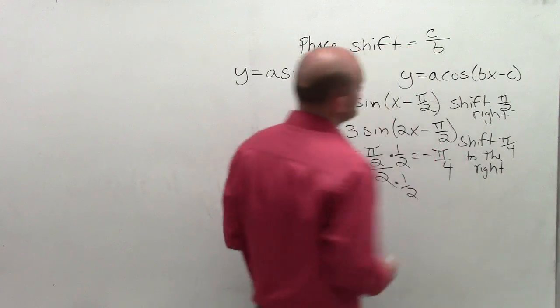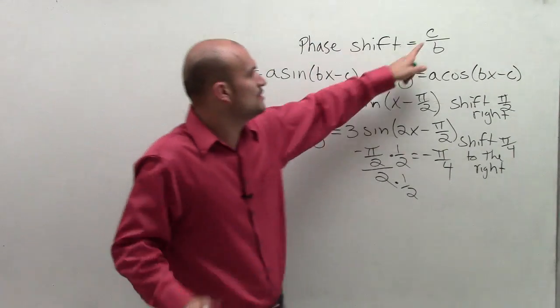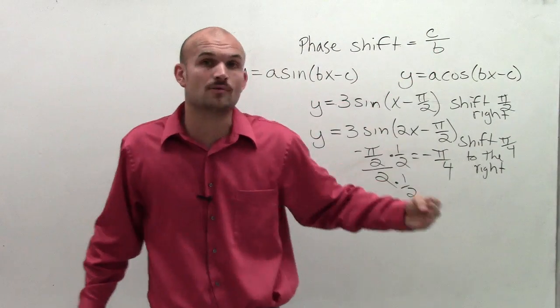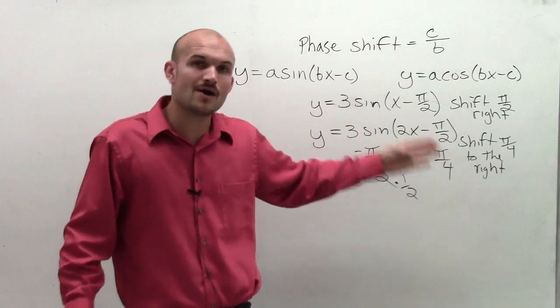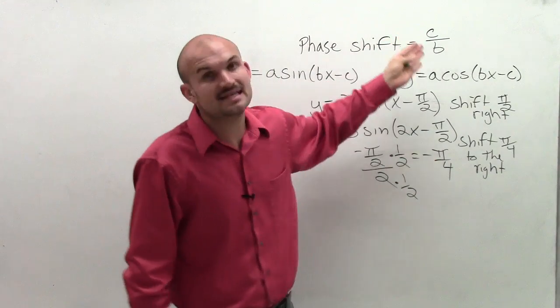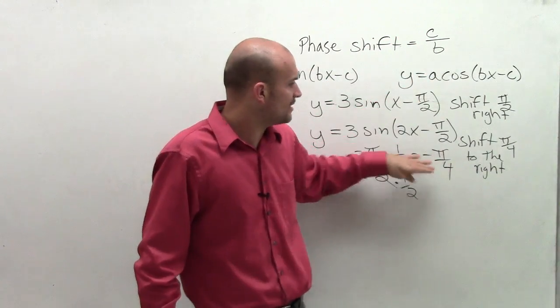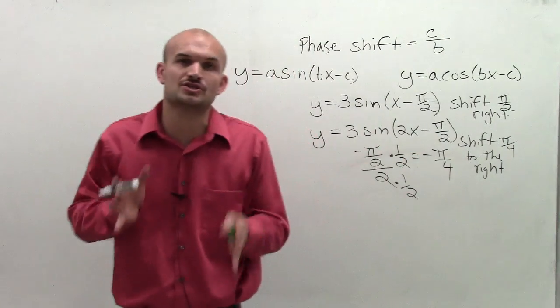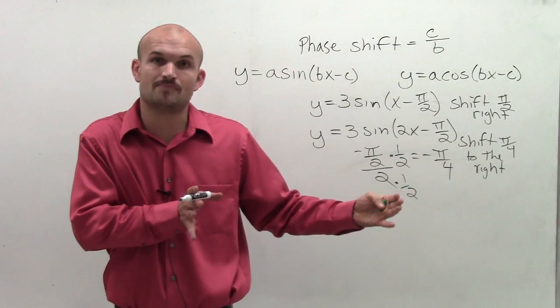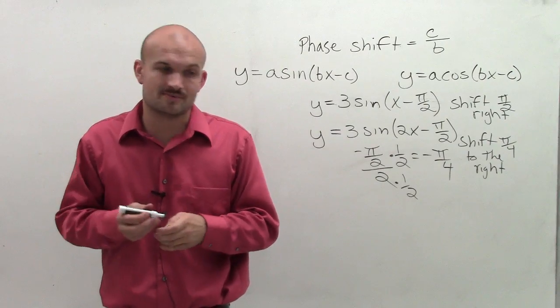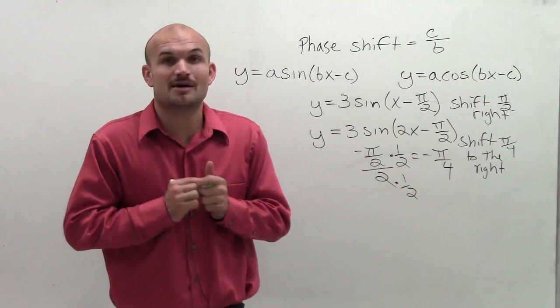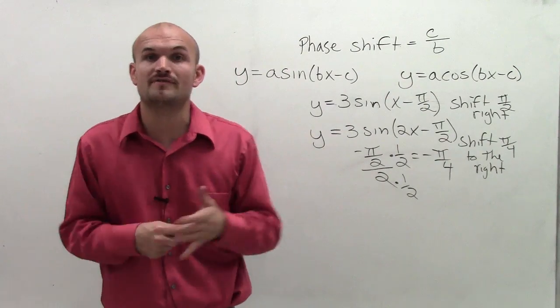So it's really important when you're dealing with phase shift that you understand if there's a b other than 1, you have to make sure you account for that phase shift by taking c divided by b. Then that value is going to tell you where to shift it, either left if it's positive or right if it's negative. So there you go, ladies and gentlemen. There's a quick definition of your phase shift. Thanks.